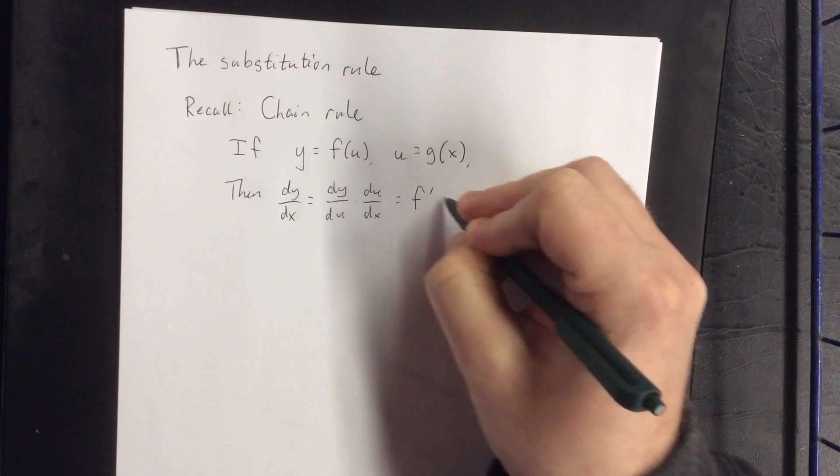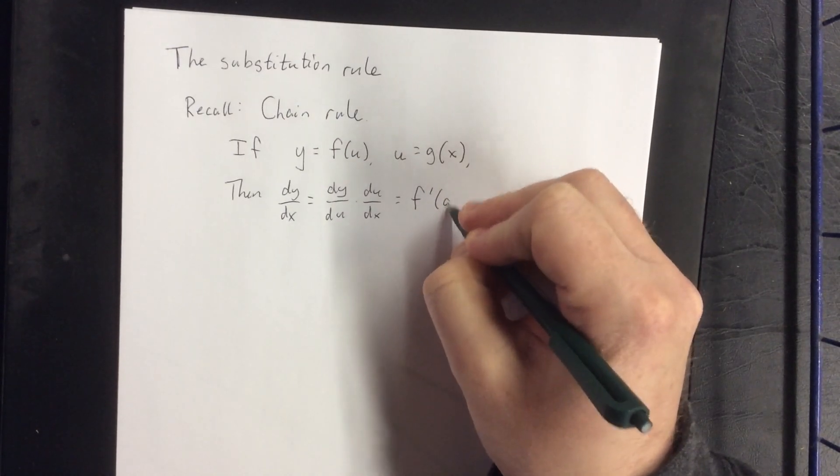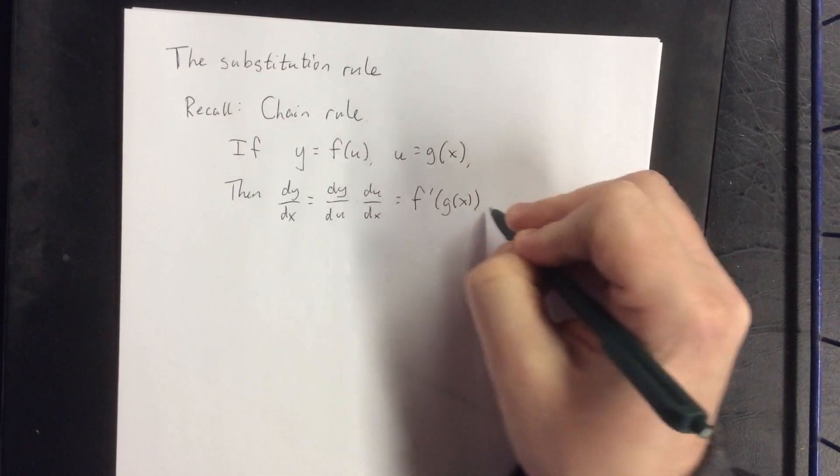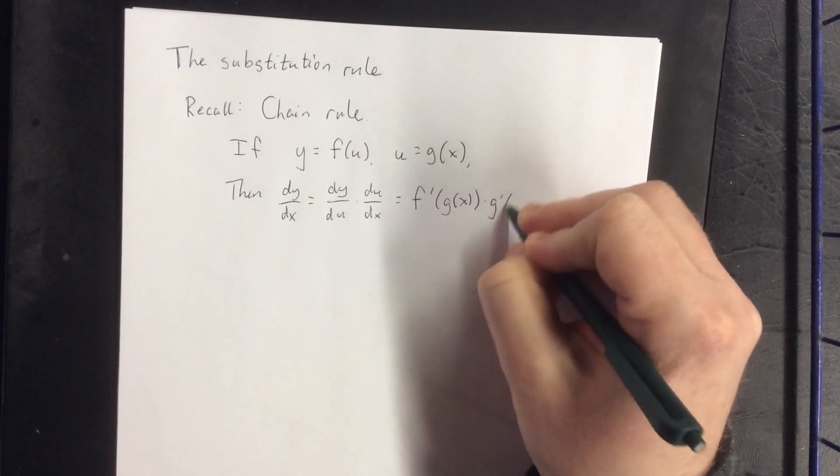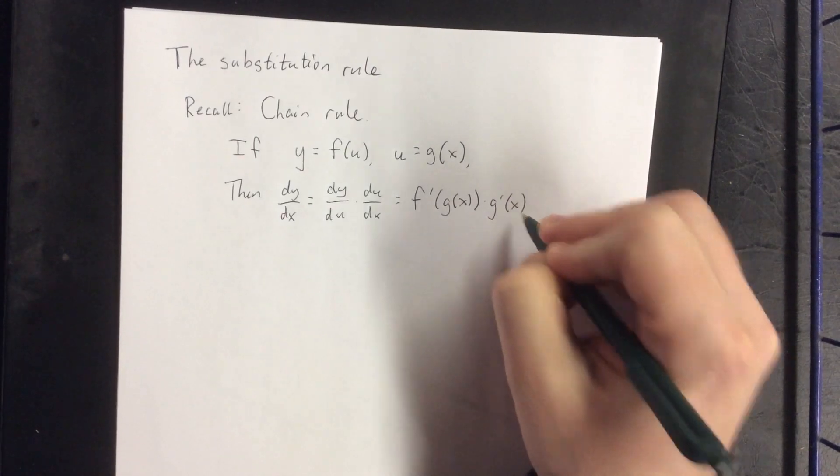Or without the use of a u, it was f prime of g of x, times g prime of x.